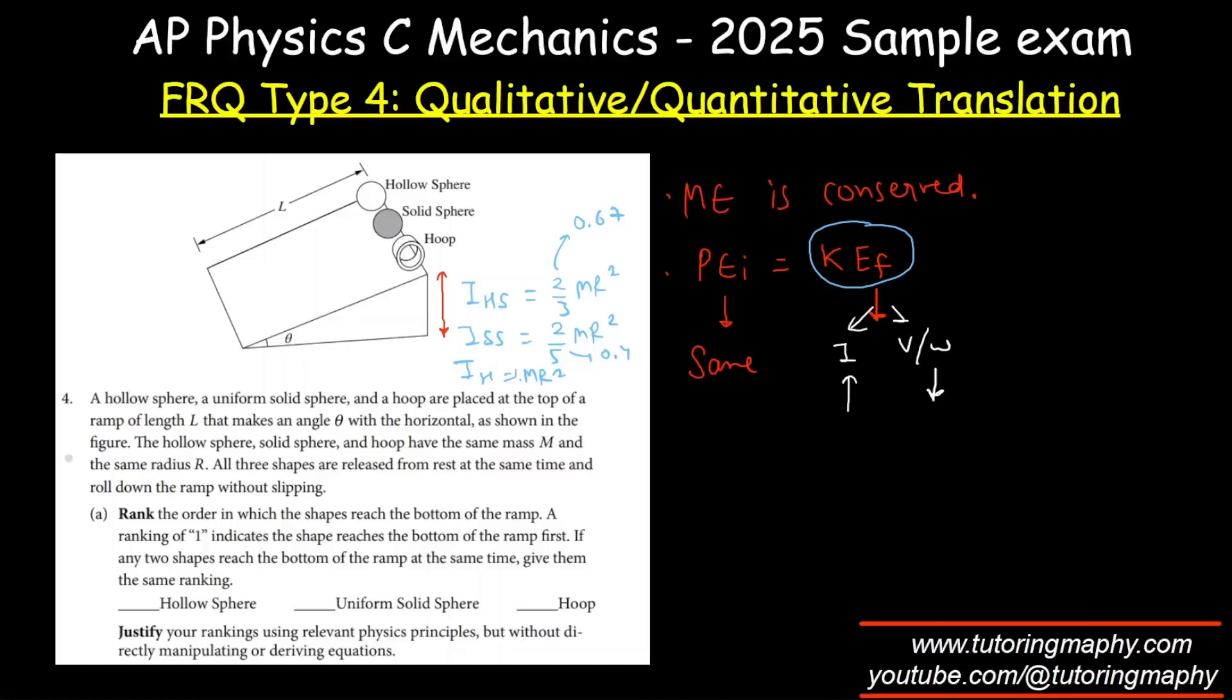So hoop will have least velocity at the bottom, followed by hollow sphere, followed by solid sphere. Least velocity means it is traveling the slowest, right? So slowest means it will take the most time. So hoop is going to take the most time, so we will mark it as 3. Then hollow sphere, and then solid sphere.